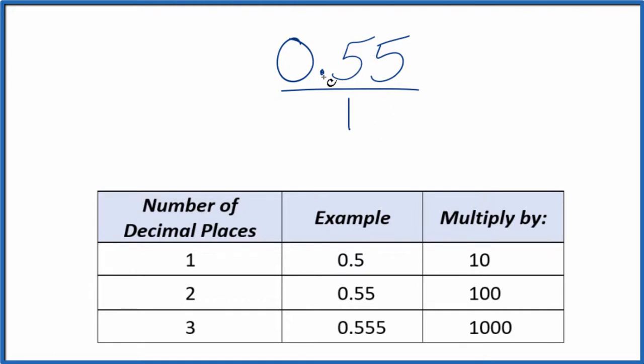What we need to do is get this 0.55 to a whole number. I see that I have two decimal places here. If there are two decimal places, we can multiply that by 100. So when we multiply this by 100, 100 times 0.55, that equals 55, and that's a whole number.